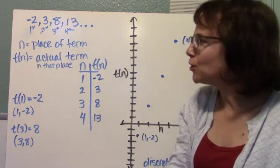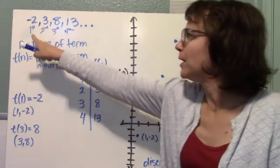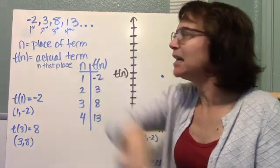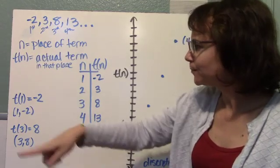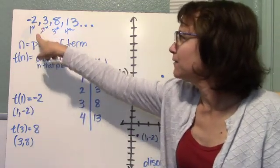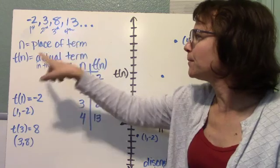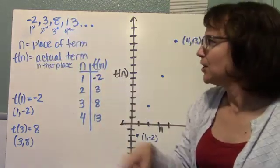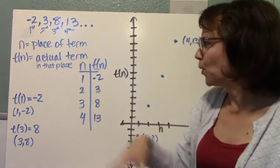t of n is the actual term in that place. So in the first place, when n equals 1, t of 1 is negative 2. So t of 1 is negative 2. Over here, in the fourth place, when n is 4, t of 4 is 13. So that's how the n and t of n work.